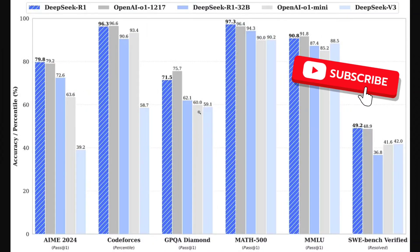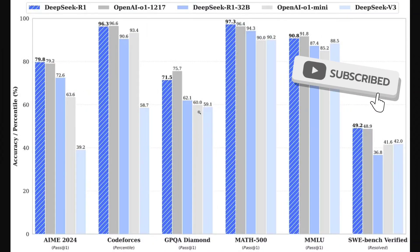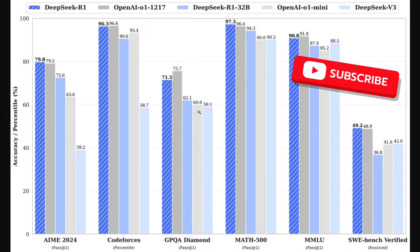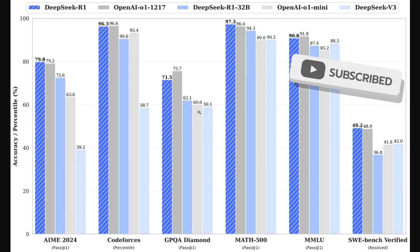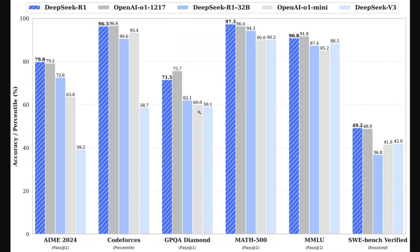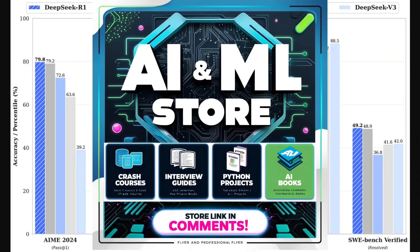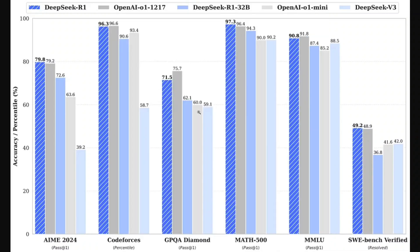The DeepSeek team, after DeepSeek V3, has released a new set of models: DeepSeek R1 and DeepSeek R1-Zero, which have outperformed OpenAI o1 on multiple benchmarks in reasoning. As a matter of fact, the model is entirely open source, so you have an OpenAI o1-level model for free.